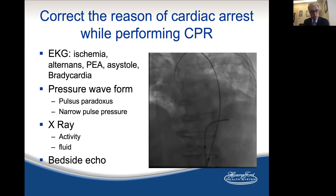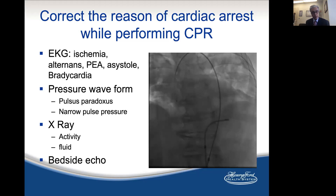You look at the EKG — you may see dyskinesia, alternans, pulseless electrical activity, asystole, or bradycardia. You look at the pressure waveform — that can give you clues: pulseless, paradoxus, narrow pulse pressure.